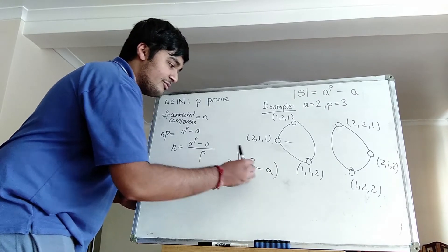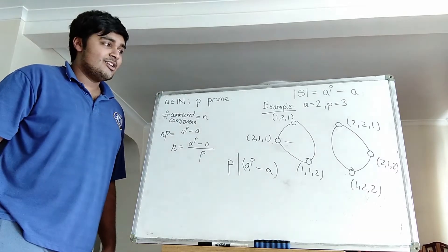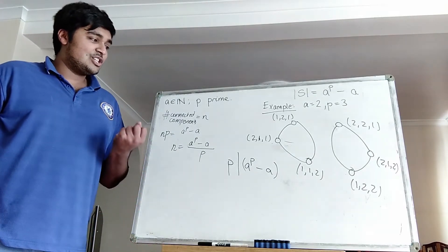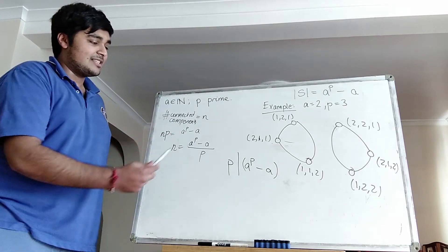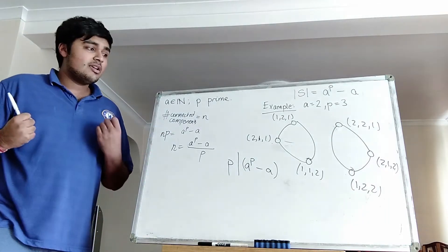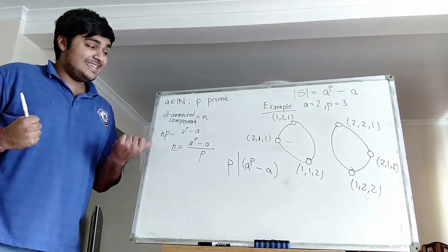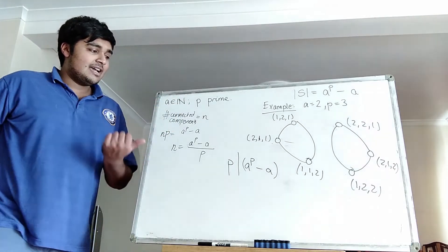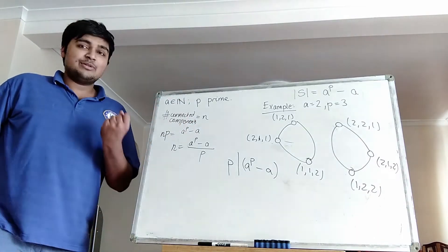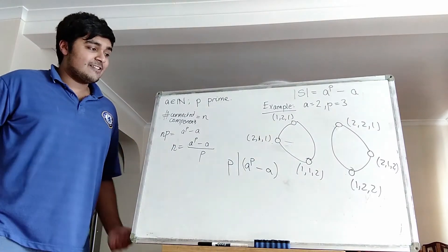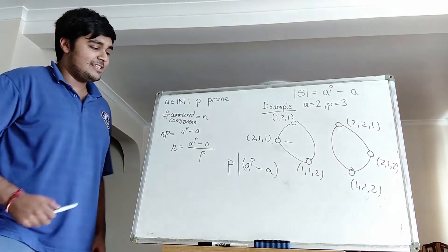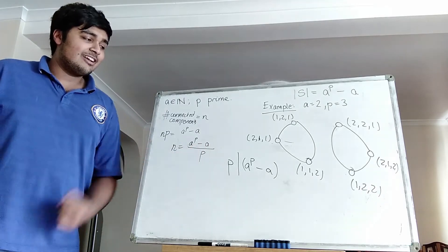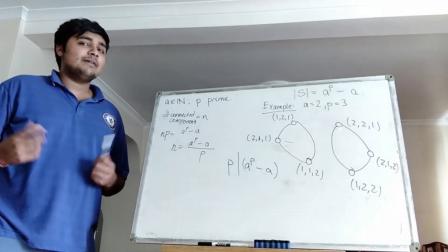So that's the proof — it's quite neat. We've essentially shown that in one way of counting the vertices you get the number of cycles times P, and the other way is just counting the vertices directly as a combinatorics problem, giving A to the P minus A vertices. Comparing these two counts, and noting that N is a natural number, we conclude that P divides A to the P minus A.